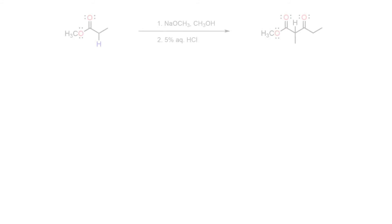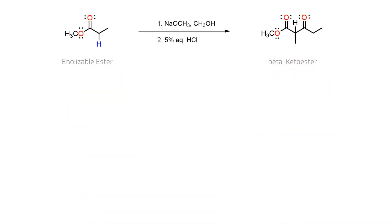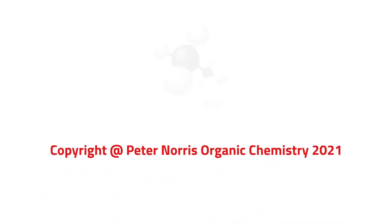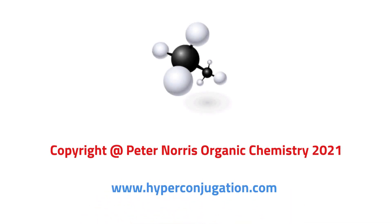In summary, enolisable esters undergo intermolecular Claisen condensation in the presence of an appropriate base to give a beta-keto ester. The mechanism involves nucleophilic acyl substitution as the key process in the formation of the new carbon-carbon bond.